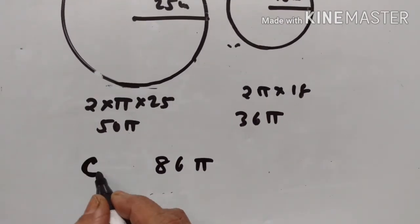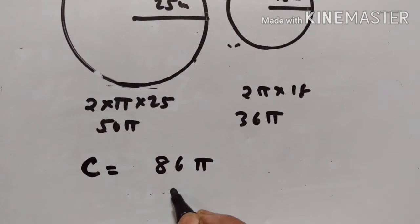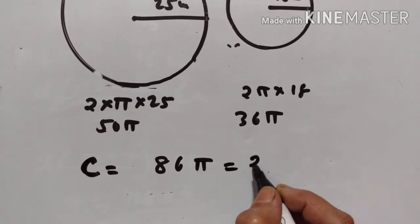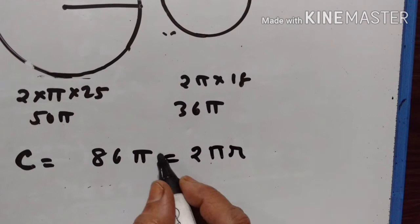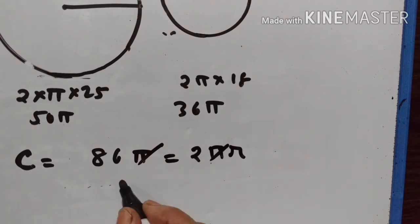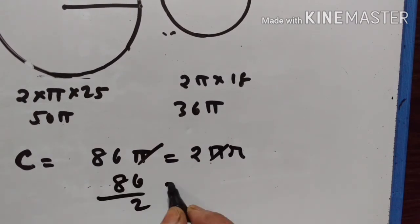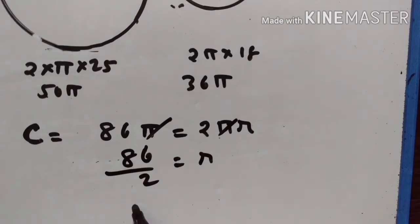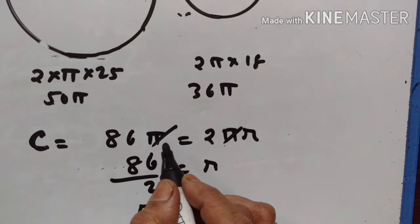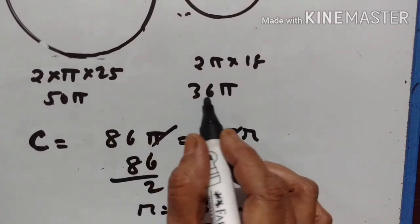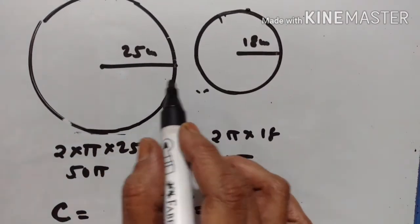Circumference of the new circle is equal to 86π. We have to find the radius. So 2πr = 86π, which gives r = 86/2 = 43 cm. So 43 centimeters is the radius of the circle which has a circumference equal to the sum of the circumferences of these two circles.